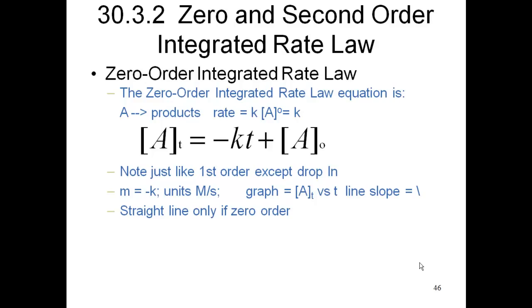So let's talk about the zero order integrated rate equation. Once again, just like in the first order, we're going to handle a simple case where we're talking about just A going to products, which means the rate is equal to K times the concentration of A to the zero power. Or another way of looking at this, since A to the zero is one, is just equal to K.